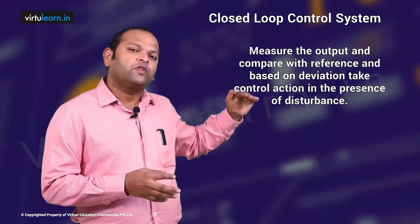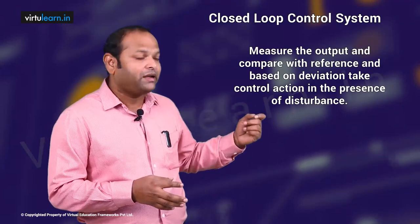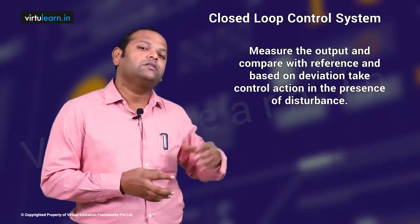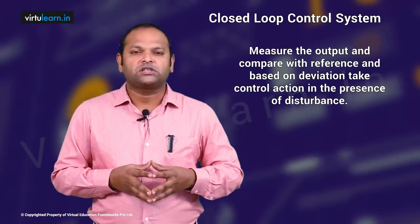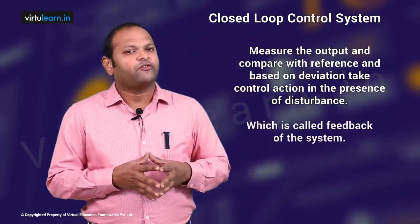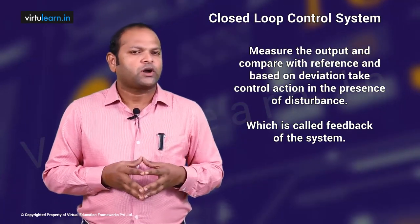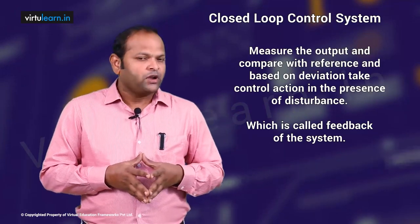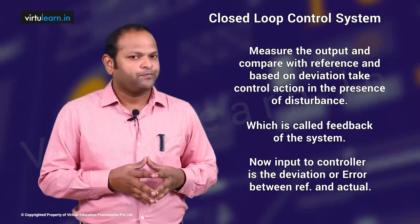This measuring and comparing is called the feedback of the system, which is why most closed loop control systems are also called feedback control systems. The input to the controller is not only the reference — we take the actual response and compare it, so the input to the controller is the deviation, or error, between the reference signal and the output signal. This error is given as input to the controller in a closed loop control system.